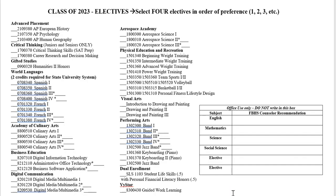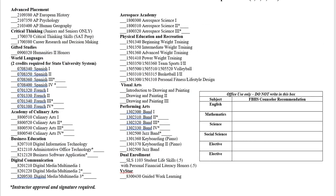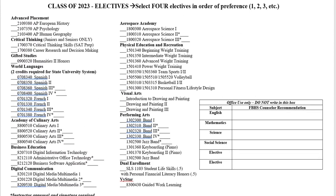Now let's look at electives. This will be slightly different for each class — I'm using the class of '23 as my example. On the spaces to the left, we're asking you to rank your elective choices, and we would like your top four. Most students will have two electives on their schedule. We do our best to get students into their top two choices, but that doesn't happen 100% of the time, so having backup options is very useful for us.